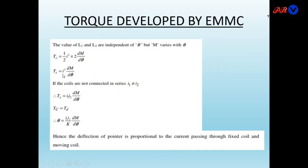The deflection torque simplifies to Td = i² · dM/dθ. If the coils are not connected in series — meaning i1 ≠ i2 — then Td = i1 · i2 · dM/dθ. Setting controlling torque Tc = kθ equal to deflecting torque, we get θ = (i1 · i2 / k) · dM/dθ. Hence the deflection of the pointer is proportional to the product of the currents through the fixed and moving coils, and in this way we can calculate AC voltage or current from the electrodynamometer instrument.